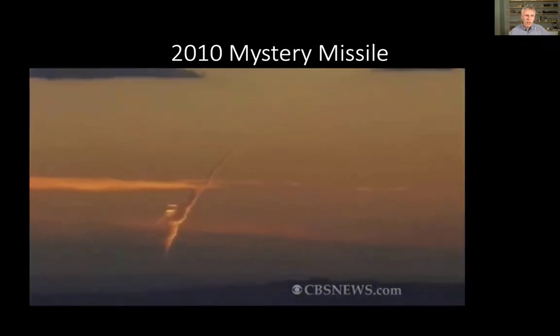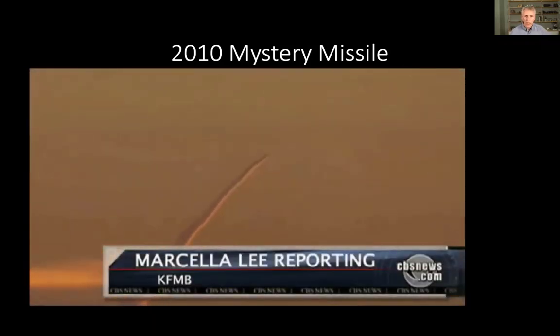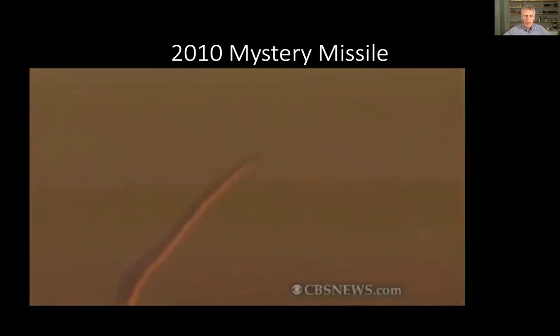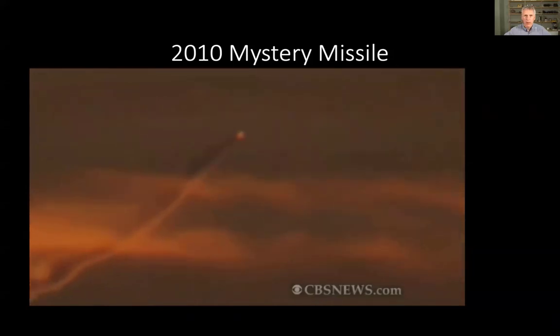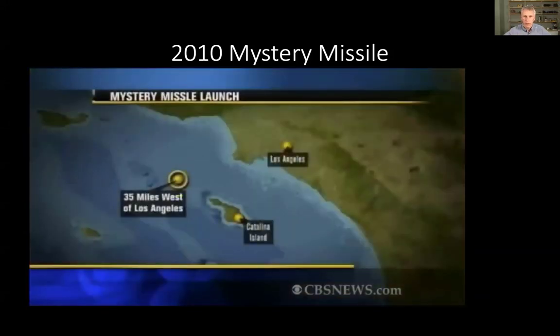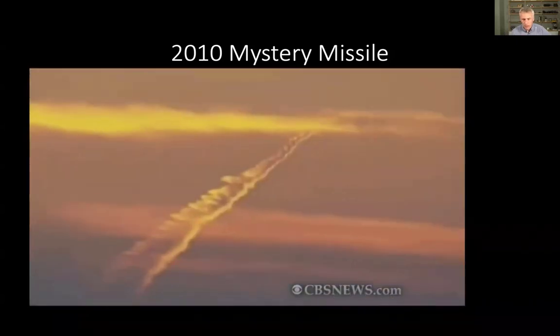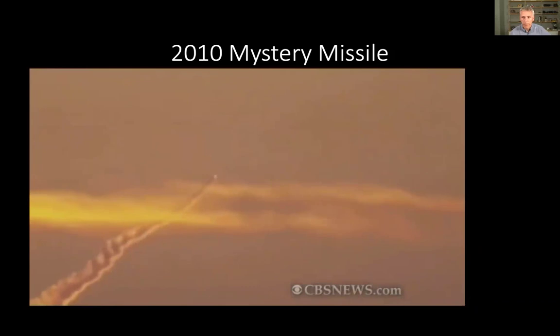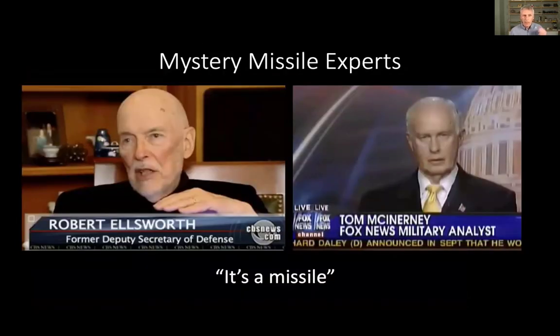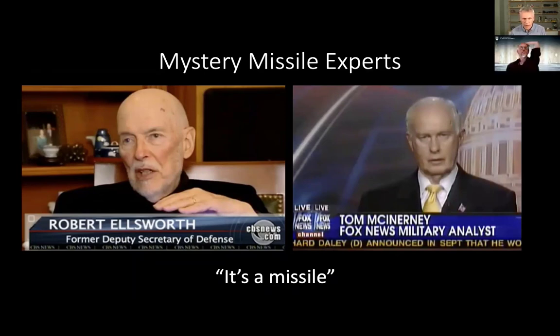2010 mystery missile. This was a big deal back in 2010. You may remember it if you are old enough. And someone fired a missile over Los Angeles. Nobody knew what it was. The military didn't know what it was. And they said it wasn't them. And they didn't know what it was. They thought it was 35 miles off the coast of Los Angeles. And people were suspecting it was the Chinese doing a show of force. Very dramatic looking footage there of what looks like a missile shooting up in the air. The media likes to have experts. So they went out and found a couple of experts. They found Robert Ellsworth, the former Deputy Secretary of Defense. And Tom McInery, a general and former fighter pilot. And both of them said it is a missile. And the general, in fact, was 100% certain. And he said he'd flown hundreds of combat missions. And he knew exactly what a missile launch looked like. And this was a missile launch. But he was wrong. It was not, in fact, a missile launch.